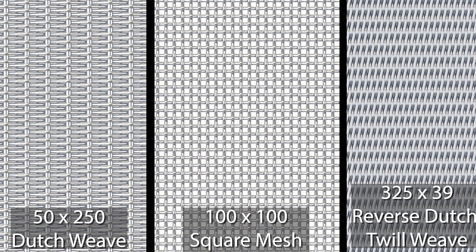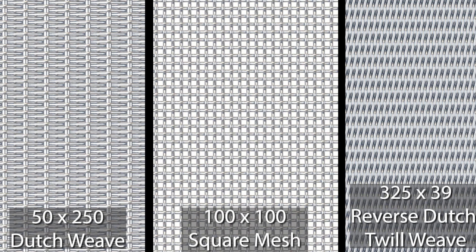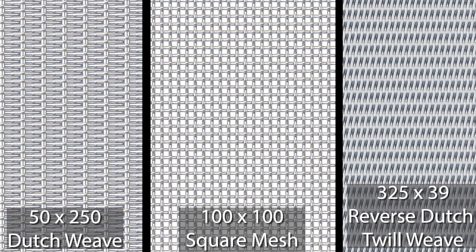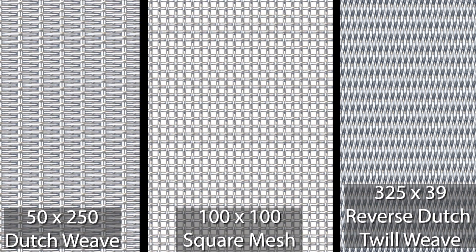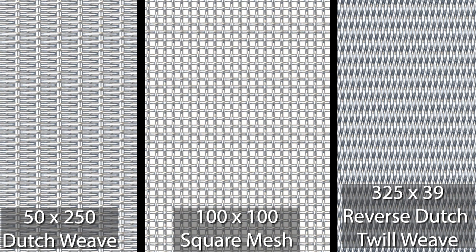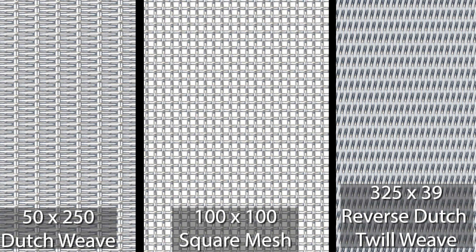With wire mesh, it's possible to have a high surface area and a high porosity, or a high surface area and a low porosity. Consider the following examples — all have high surface area with varying porosities. Each weave is quite different, and together with the mesh counts and wire diameter, allow for these permutations.